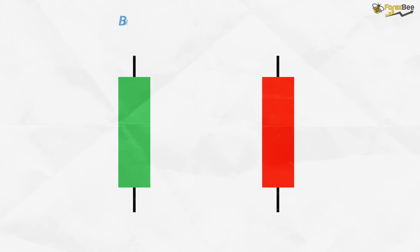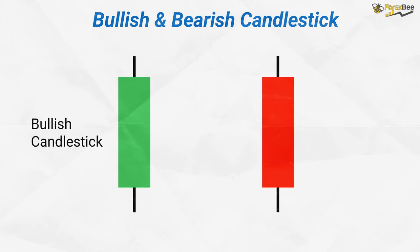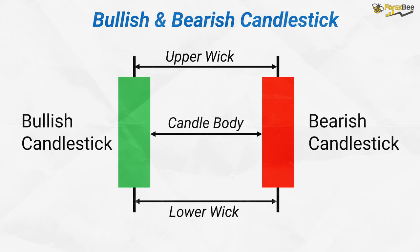Here, you can see both types of candles side by side. These are the bodies, these are the upper wicks, and these ones are the lower wicks of these candles.